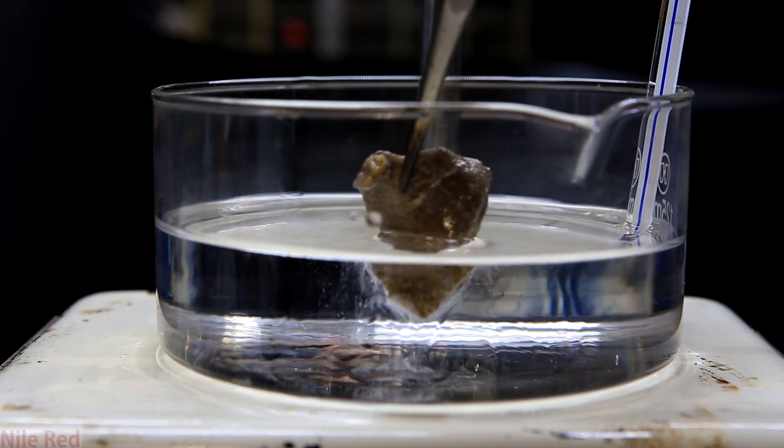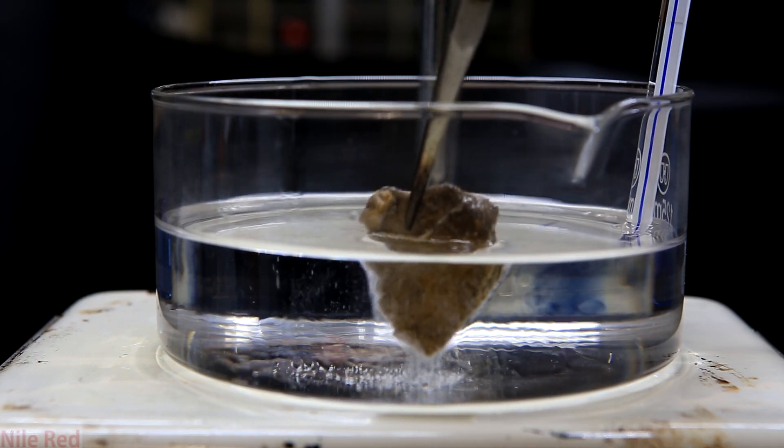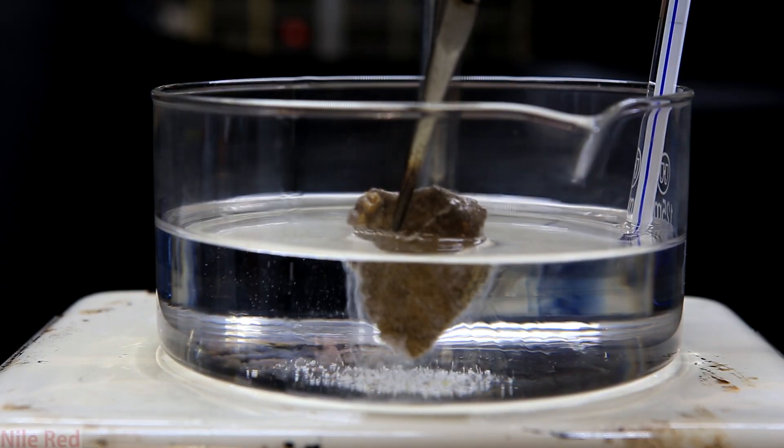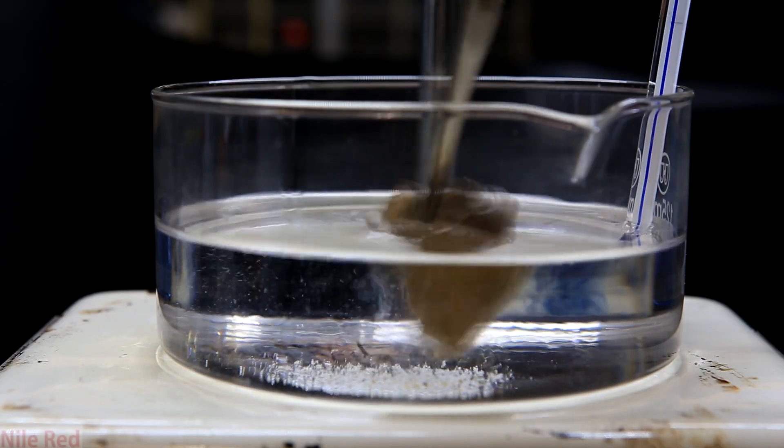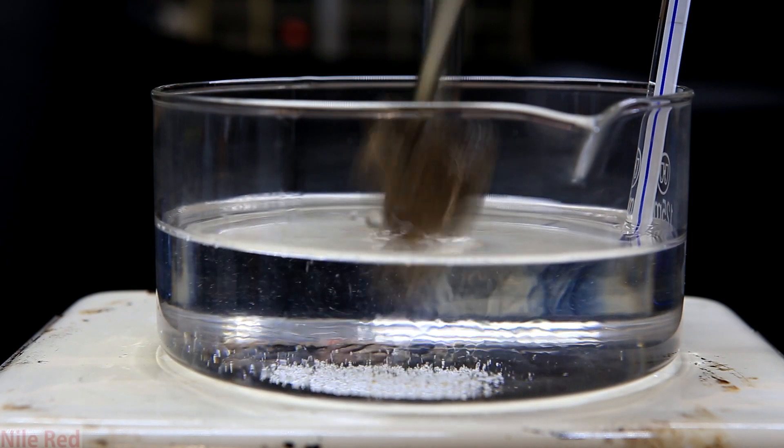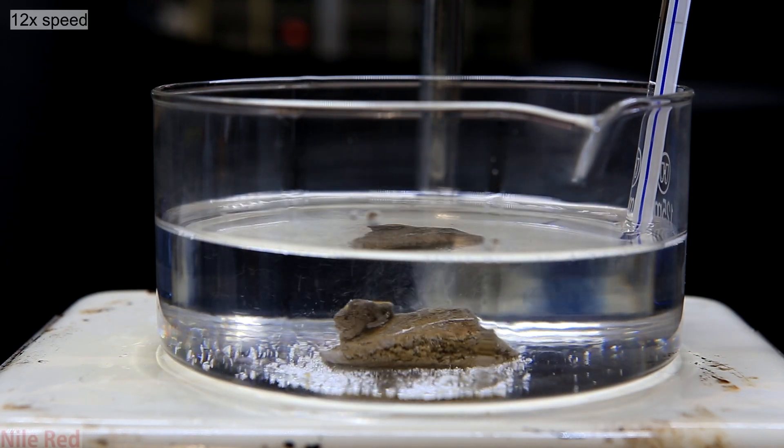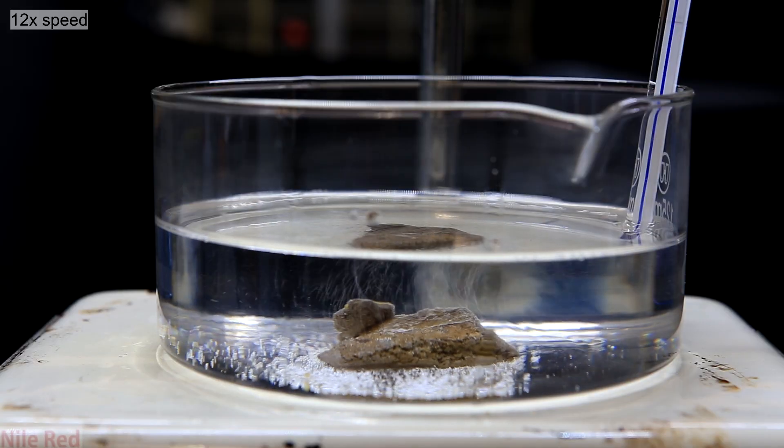Once the oil was hot enough, the stir bar was removed and a small piece of sodium was dipped inside. Immediately, you can see bits of oxidized sodium products falling to the bottom of the crystallizing dish. The sodium is dropped to the bottom and eventually it liquefies.